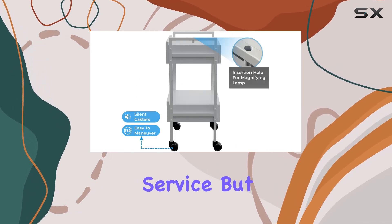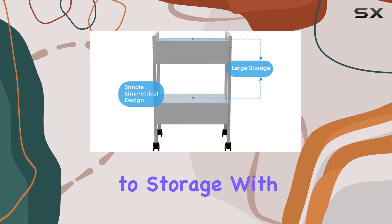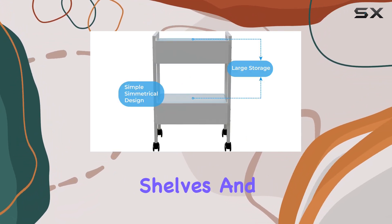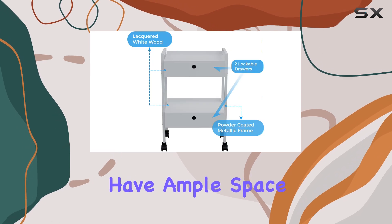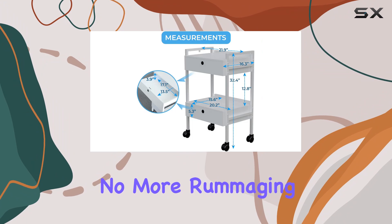But it's not just about looks—this trolley means business when it comes to storage. With two spacious shelves and two lockable drawers, you'll have ample space to organize all your beauty equipment and instruments. No more rummaging through drawers or cabinets; everything you need is right at your fingertips.